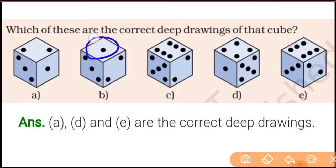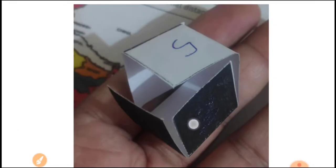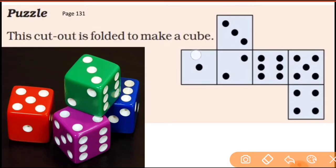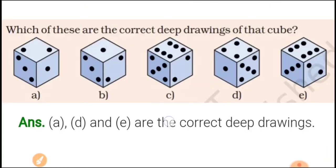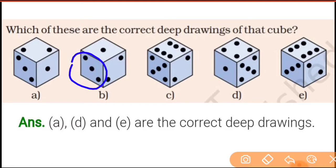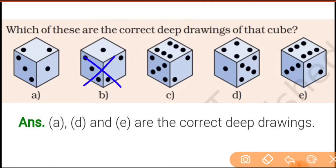Number B: top pe kya hai — one. Ab isko fold karke dice banao. Left mein three aayega aur right mein two aayega. But here left mein two hai aur right mein three hai — it is opposite. That's why drawing B is not a correct deep drawing.